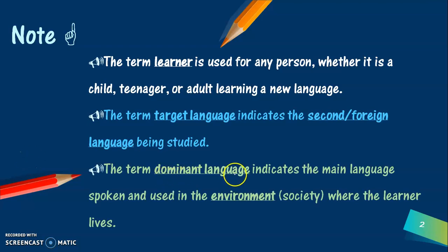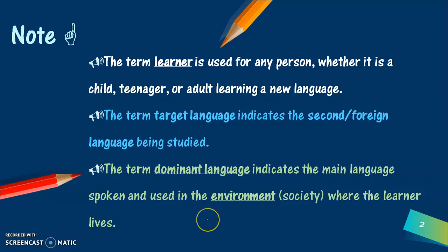Finally, we have the term 'dominant language,' and by dominant language we mean the language that is spoken in the environment, that is the society where the learner lives. For example, let's say we have an Italian person living in Lebanon, learning English. Here, what is the dominant language? It is Arabic. Even though the target language is English and the native language of the learner is Italian, the dominant language in the environment — the society — is Arabic.